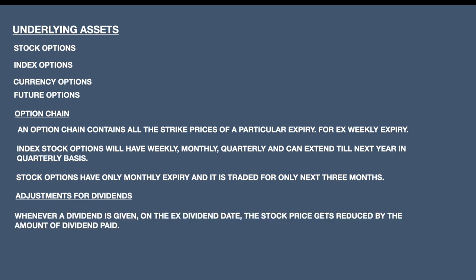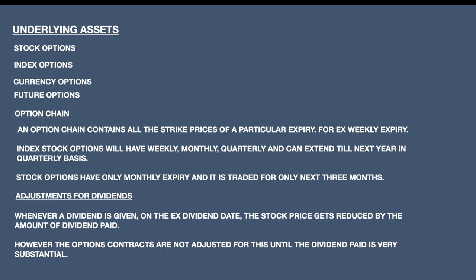Coming to how options are adjusted for dividends: whenever a dividend is given on the ex-dividend date, the stock price gets corrected by the amount of dividend paid to the shareholder. However, option contracts are not adjusted for this unless the dividend paid is very substantial. The underlying price may get reduced by the dividend paid, but the stock option contract does not change when a dividend is paid unless the dividend is extremely high.